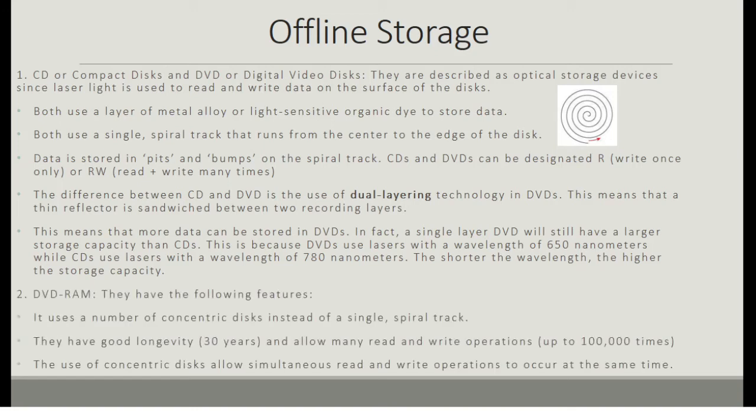DVD RAM uses a number of concentric discs instead of a single spiral track, which is much different from the spiral track used in CDs and DVDs. DVD RAMs have good longevity — about 30 years — and allow many read and write operations, up to 100,000 times. The use of concentric discs allows simultaneous read and write operations to occur at the same time.